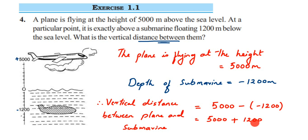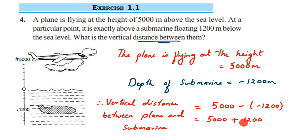Instead of subtracting, we do an addition — we add the additive inverse of the second integer. So instead of a minus sign I've kept a plus sign, and the additive inverse of the second integer is plus 1200. Now you just add them: 5000 plus 1200 equals 6200 meters. So the vertical distance between the plane and the submarine is 6200 meters.